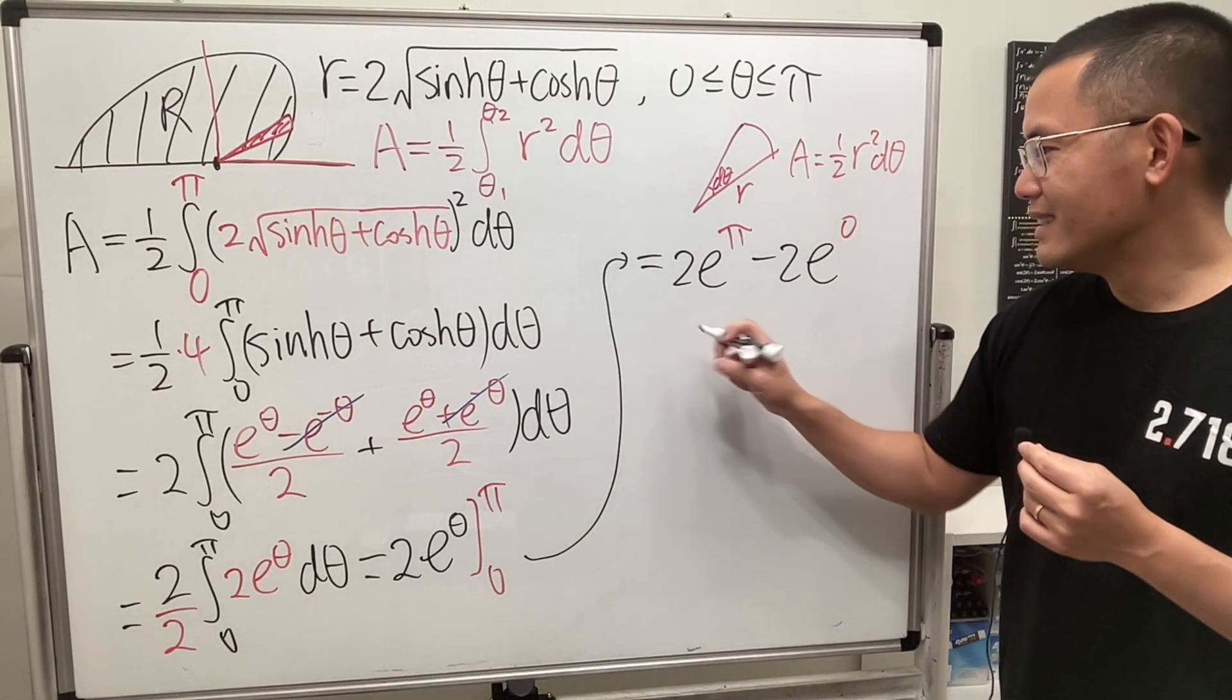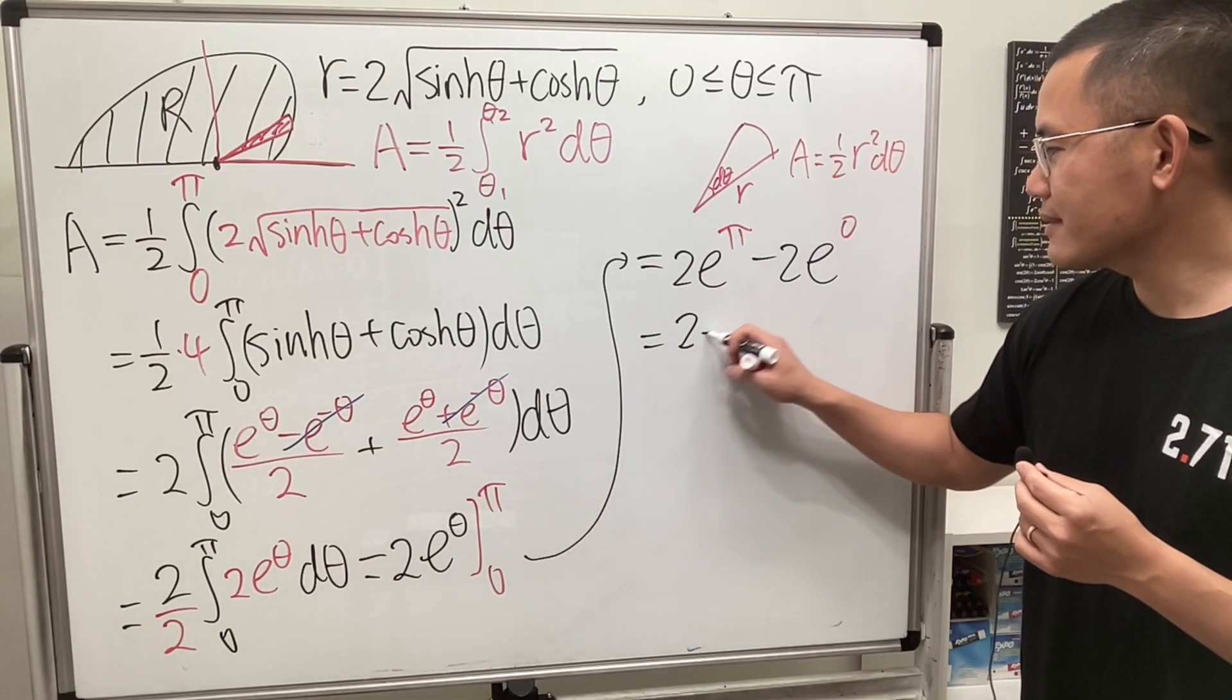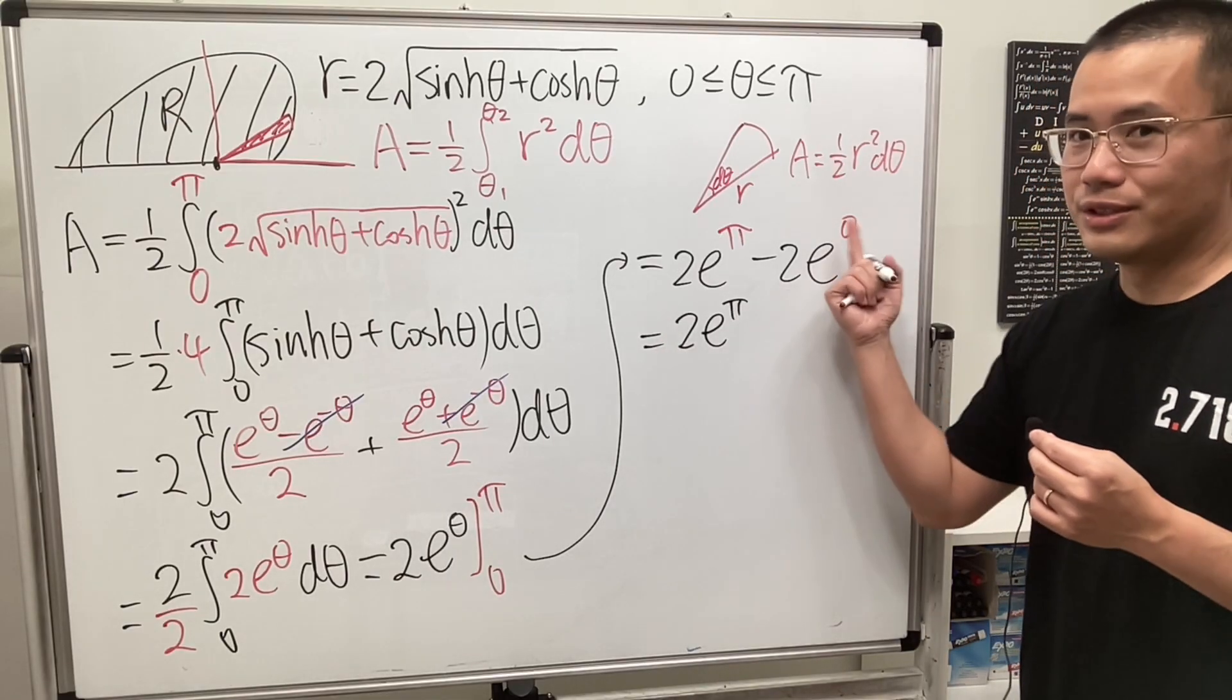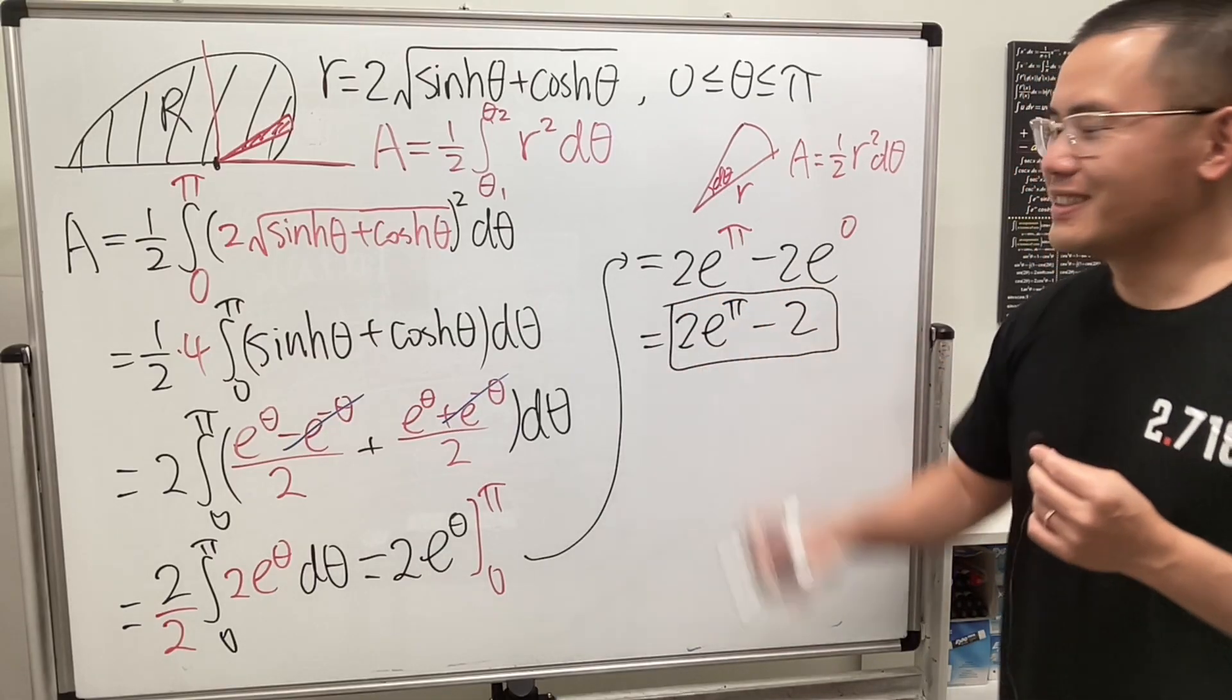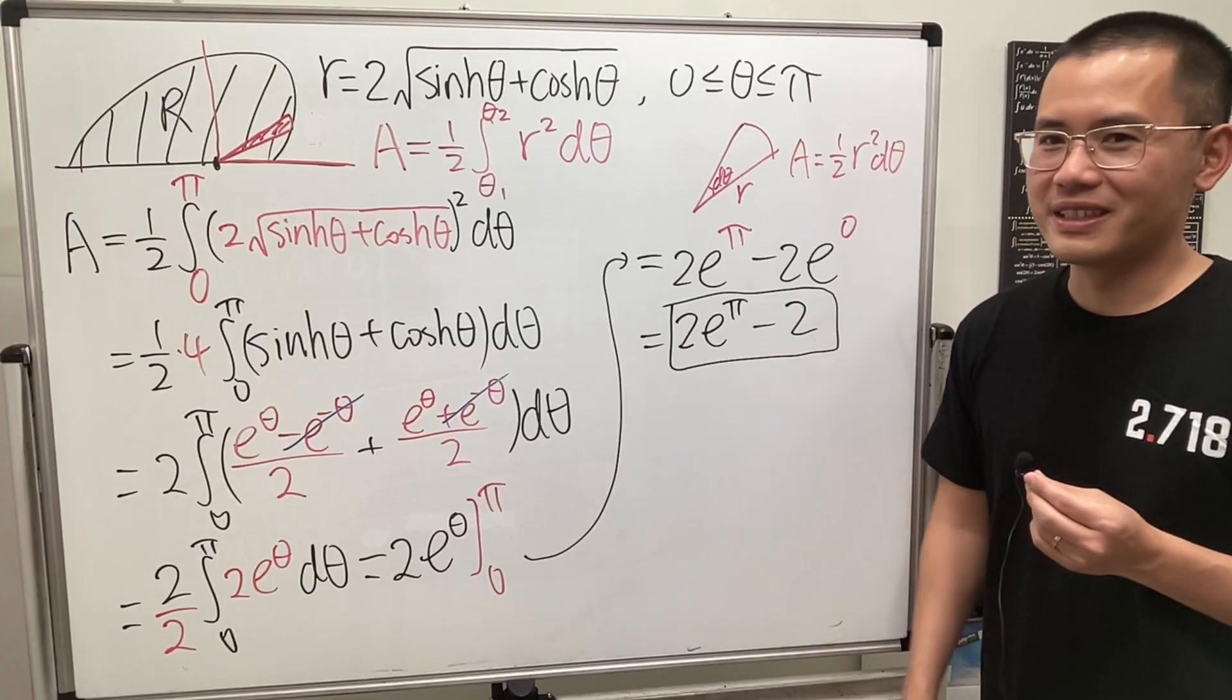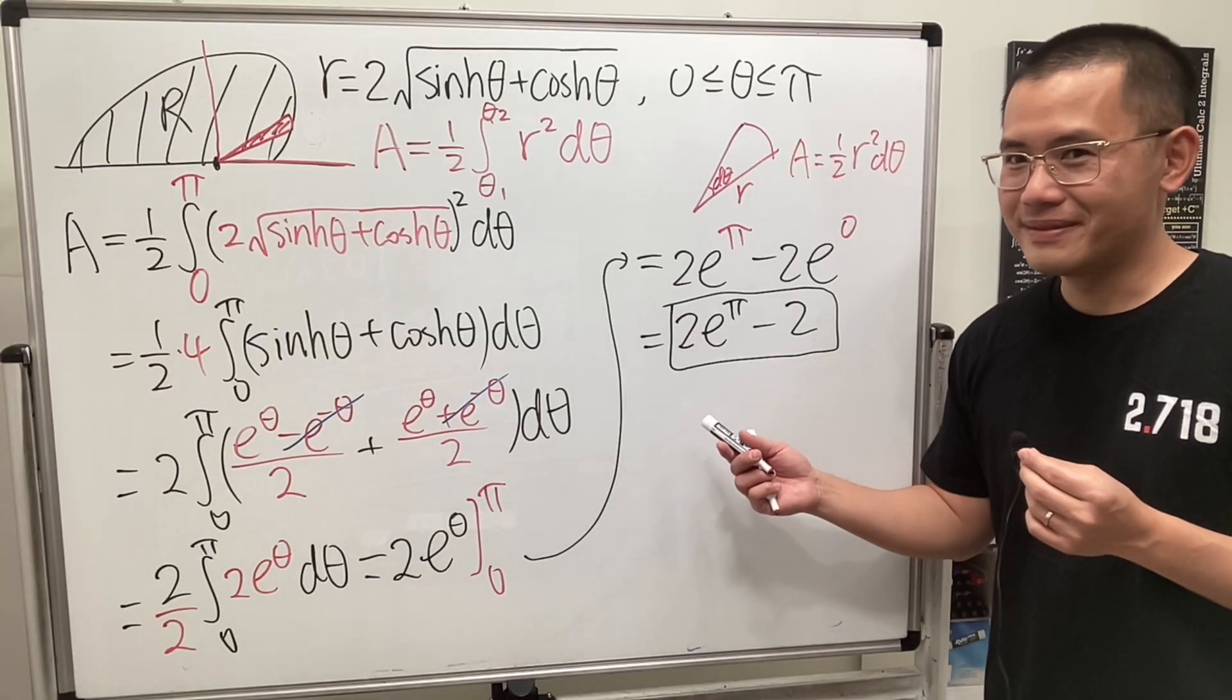And finally, this right here is just 2 e to the pi. And then e to the 0 is, of course, 1, so minus 2. So this is like a very nice first question, right? So I get you started and all that good stuff. So that's it.